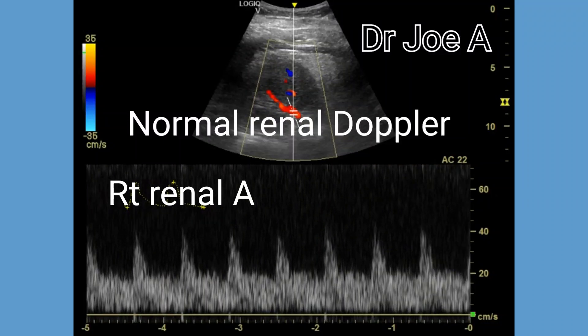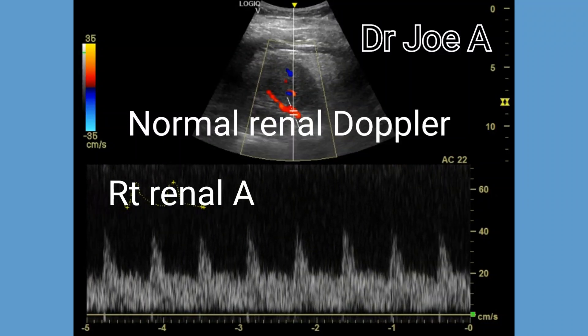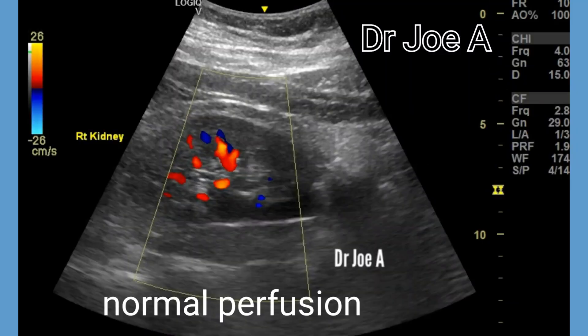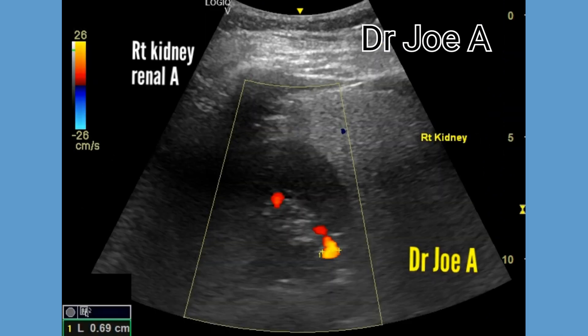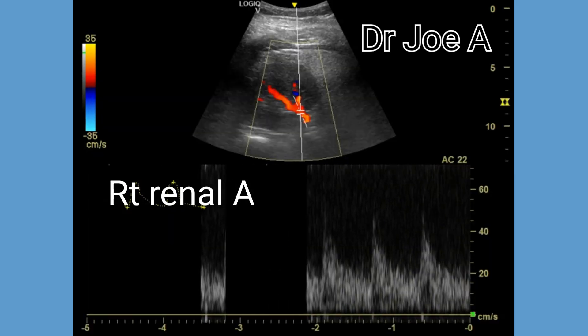This is a normal renal Doppler study. Both kidneys show normal perfusion on color Doppler ultrasound, with normal arterial flow seen up to the peripheral one-third of the kidney. The renal artery has a normal diameter of seven millimeters.